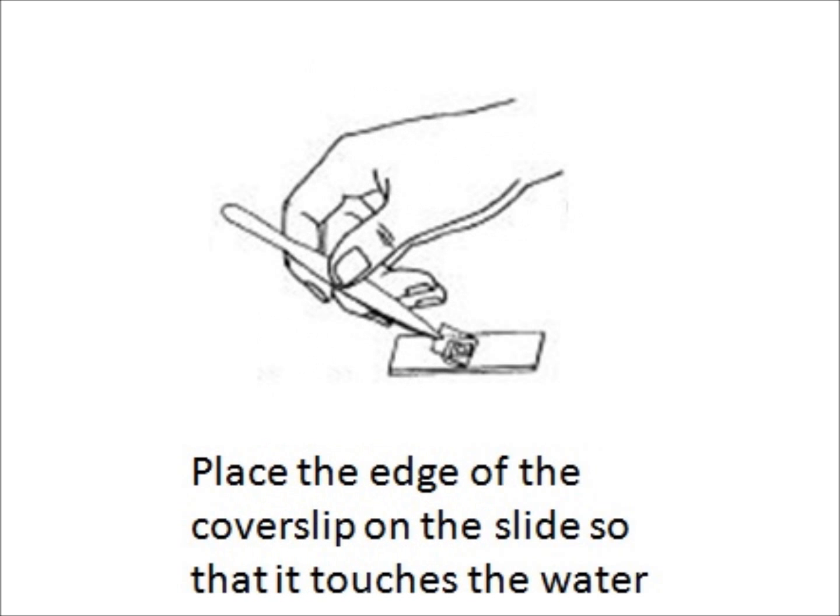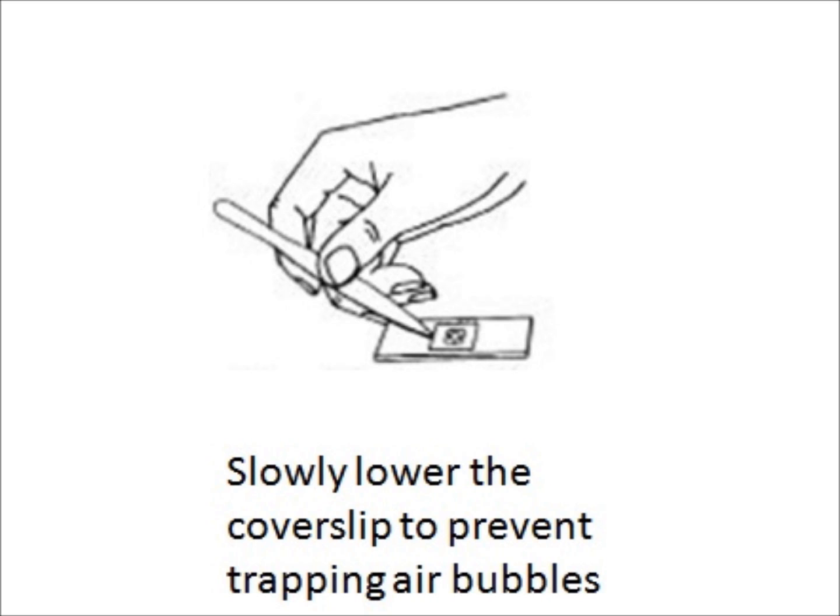Then you need to put a cover slip on without trapping too many air bubbles. The best way to do this is to hold the cover slip at an angle and actually to touch the edge of the water and then to lower it gently. You can do this using your fingers or some sort of implement.